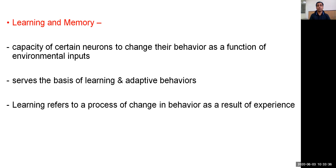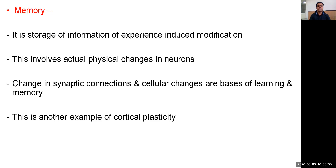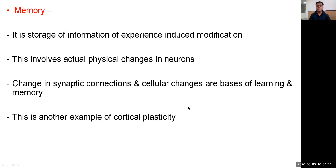Learning and memory represent the capacity of certain neurons to change their behavior as a function of environmental inputs. Learning refers to a process of change in behavior as a result of experience, while memory is the storage of information from experience-induced modification. This involves actual physical changes in neurons, changes in synaptic connections, and cellular changes, which are the basis of learning and memory — another example of neural plasticity. With this, we conclude our discussion on the neocortex, the association cortices, and the various lobes of the brain: the frontal lobe concerned with motor activity, parietal lobe with sensory activities, temporal lobe with audition and olfaction, and the occipital lobe with vision.